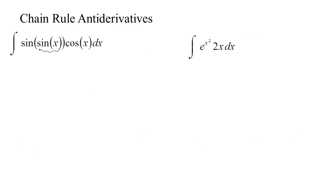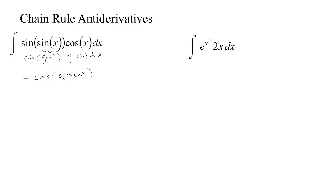Here's one. We have our inside function sine, and on the outside we have the derivative of that multiplying dx. So we've got g of x inside the sine function, and then g prime of x dx. Sine must be the derivative of the outside function. So I'm going to guess, just by what I know about the chain rule, that this is the right answer. If you take the derivative of cosine, you get negative sine, so that would give sine. Evaluate the inside: sine of sine times the derivative of the inside, which is cosine x. Add any constant, and you've got the whole family.